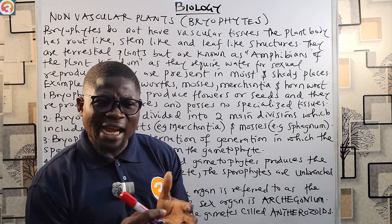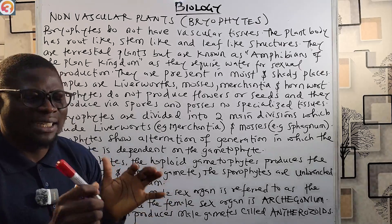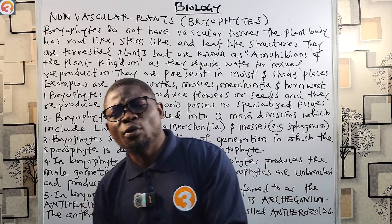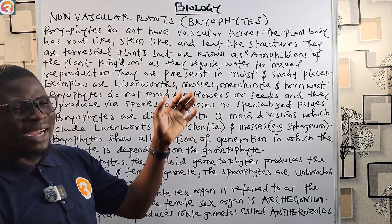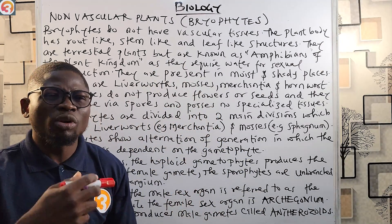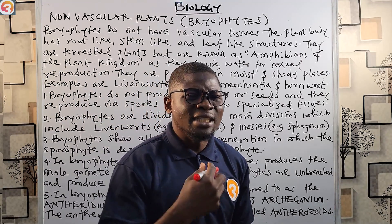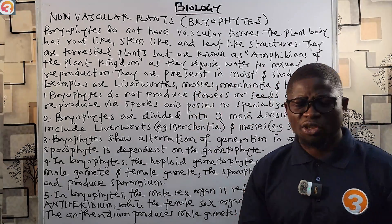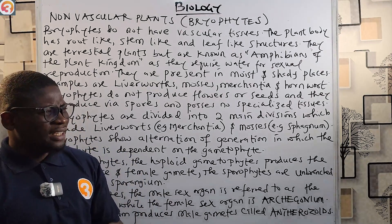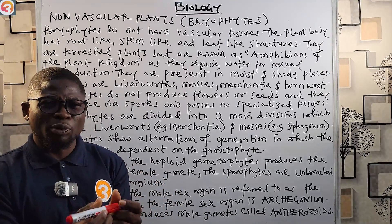Bryophytes are terrestrial plants — they grow on land for nutrients. But one important thing is that they are called the amphibians of the plant kingdom. Just as amphibians are animals that live on both land and water, we call bryophytes the amphibians of the plant kingdom because they need water for sexual reproduction. That is the reason why we call bryophytes the amphibians of the plant kingdom.